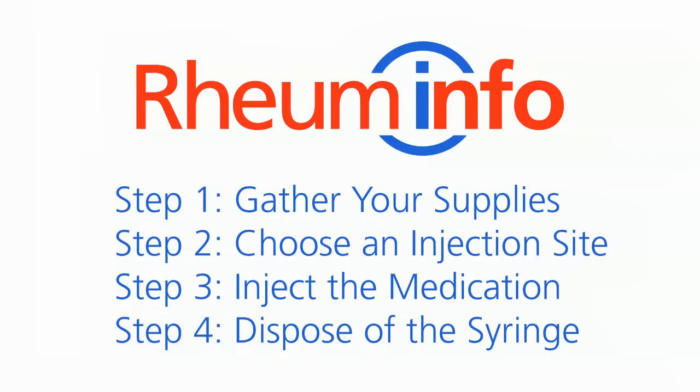Okay, let's get on with the injection. We're going to teach you how to inject using four basic steps. Step one, gather your supplies. Step two, choose and prepare an injection site. Step three, inject the medicine. And step four, dispose of the syringe.